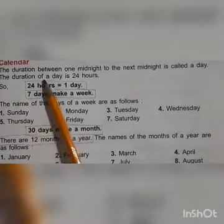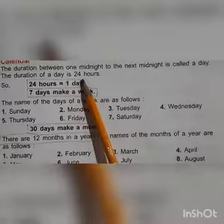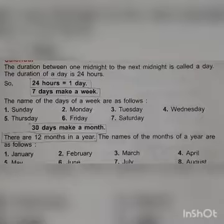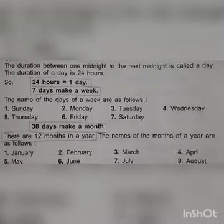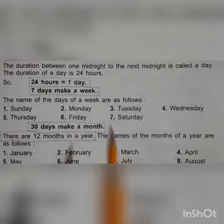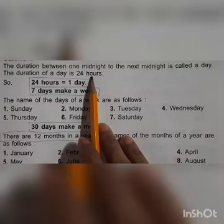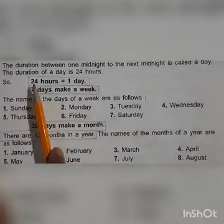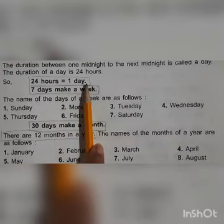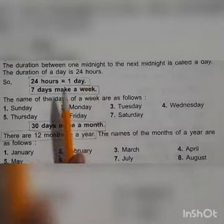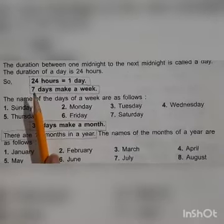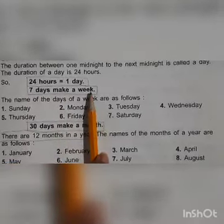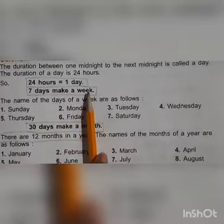The duration of a day is 24 hours — from today's midnight to tomorrow's midnight, the total count is 24 hours. So we can say 24 hours means one day. When we put 7 days together, it makes a week.